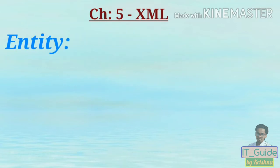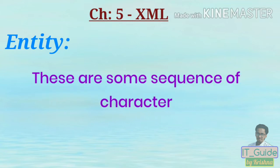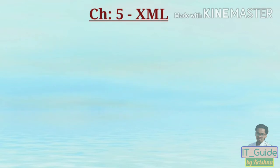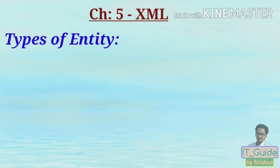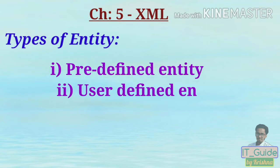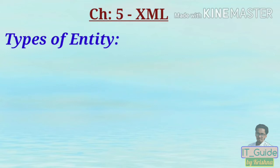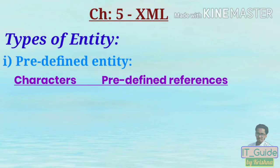The next topic is entity. Entities are a sequence of characters that represent another sequence of characters. Types of entity: number one, predefined entity, and number two, user defined entity. Here is a table that shows the characters and their corresponding predefined entity references.